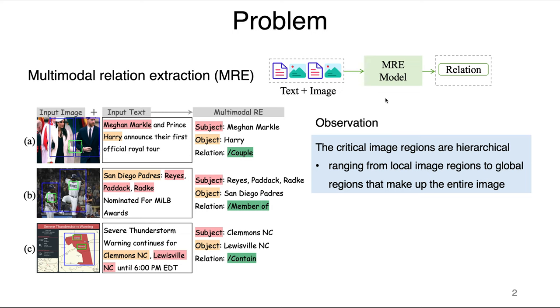Taking the example of the left image A, we can recognize the two people in the human region of the image. The relationship between them, the couple, can be inferred from the local image region that shows the linked arms.